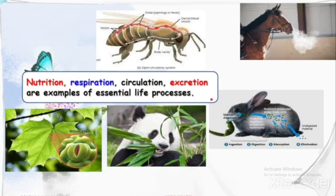The important life processes are nutrition, respiration, circulation, and excretion. These are examples of essential life processes. In a plant, stomata absorb carbon dioxide from the environment and, in the process of photosynthesis, release oxygen.